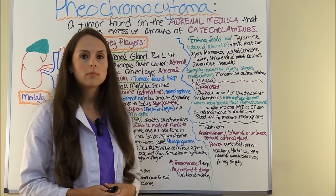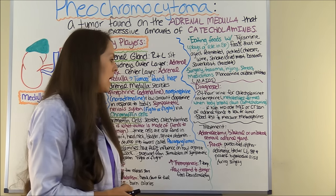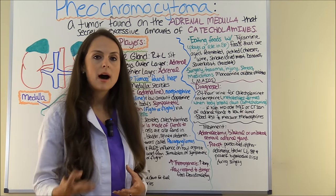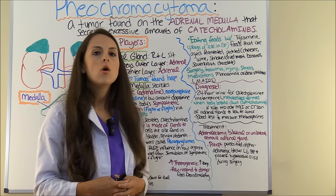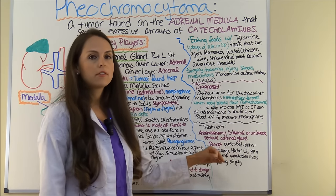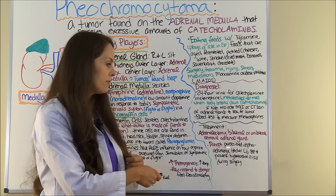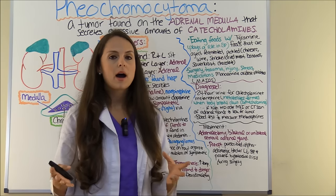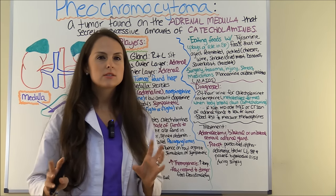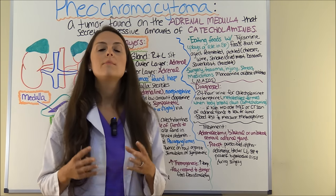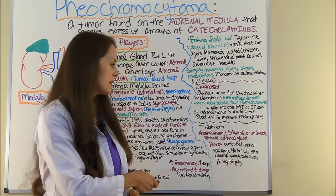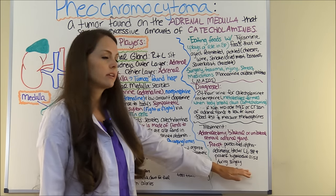Treatment typically tends to be an adrenalectomy — removing the adrenal gland. It can be bilateral, removing both if there are tumors in both, or unilateral, removing just one. From a nursing standpoint, patients may be prescribed an alpha adrenergic blocker preoperatively — usually about 10 days to three weeks before surgery — because these patients are dealing with major blood pressure issues. This medication helps bring the blood pressure down and prevents a hypertensive crisis during surgery.